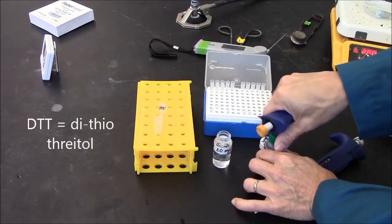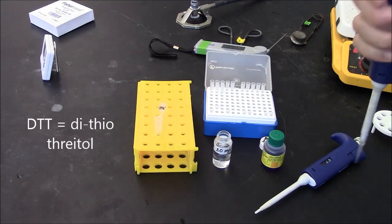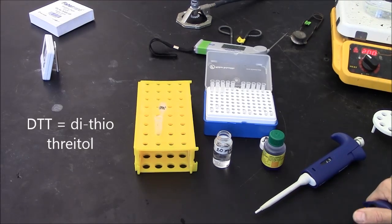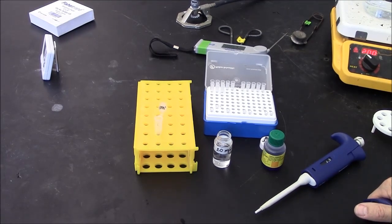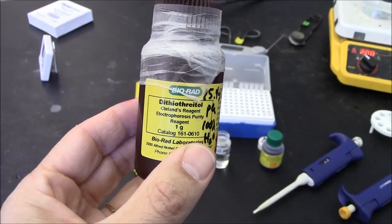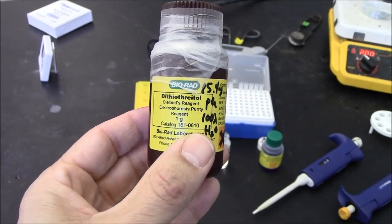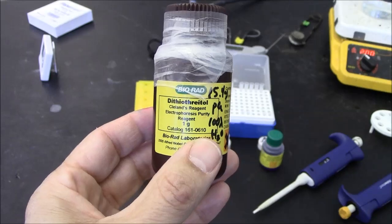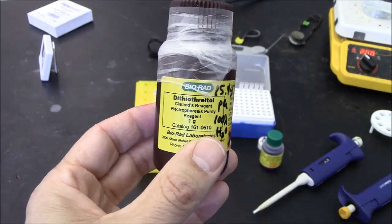Now I need to add some Dithio-3-etol to break the disulfide bonds in the protein to reduce it. Dithio-3-etol is a sulfur-containing molecule that is excellent at breaking disulfide bonds in proteins.